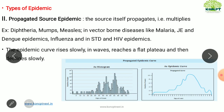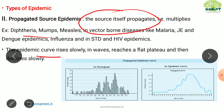Next is the propagated epidemic, where the source itself propagates or multiplies. Examples include diphtheria, mumps, measles, and many vector-borne diseases including dengue. In the epidemic curve, it rises slowly in waves, reaches a plateau, and then declines slowly. Initially there are few cases, then one case transmits to three persons, those three transmit to nine others, and so on. This gradually rising, plateau-forming, slowly declining curve is characteristic of a propagated epidemic.